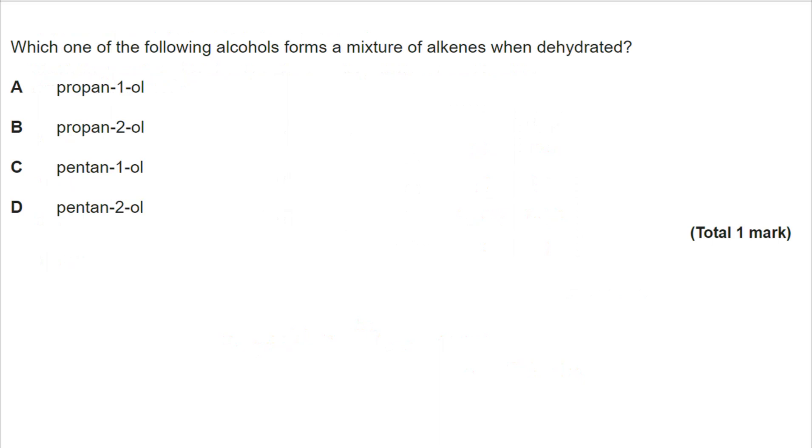Next question. We're looking here at where we can get more than one product when we dehydrate these alcohols. When we dehydrate the alcohol, we lose an OH and we lose an H from a neighbouring carbon. If I do that with propan-1-ol, I'm only going to end up with propene. So it's not that one. Similarly, propan-2-ol will make propene again. It will work and make exactly the same product.